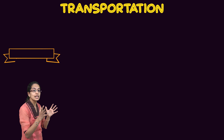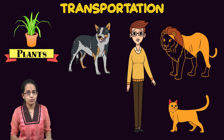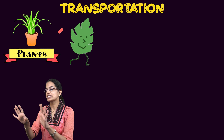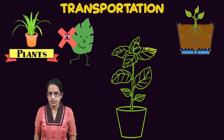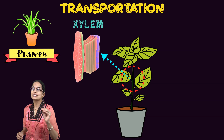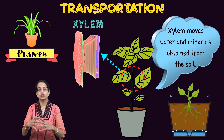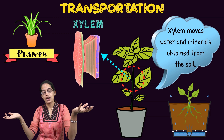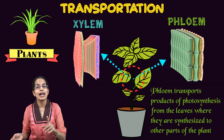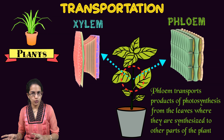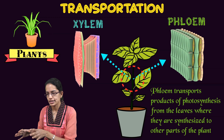Coming to transportation in plants — plants do not move, but there is movement and transportation of nutrients, water, and minerals. This occurs through xylem and phloem. Xylem takes all material from the roots through vessels and tracheids to plant parts, supplying water and nutrients. Once the leaves produce food, it is transported to various parts of the plant by phloem. We have already understood the components of xylem and phloem in previous lectures.